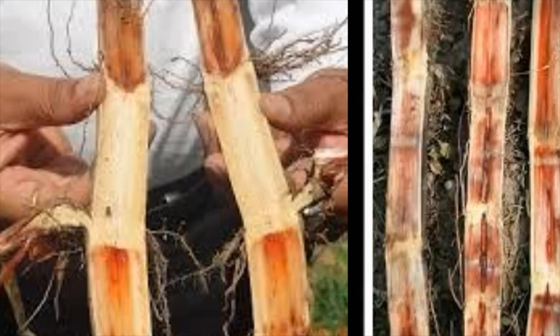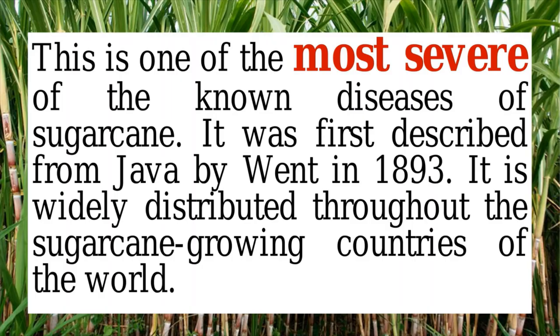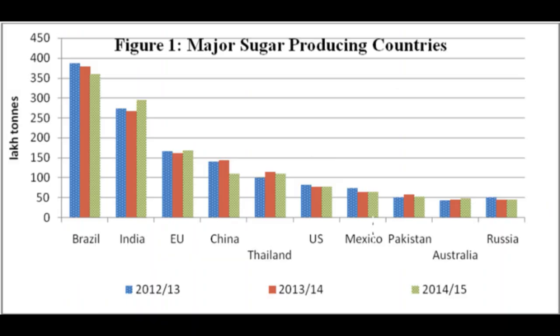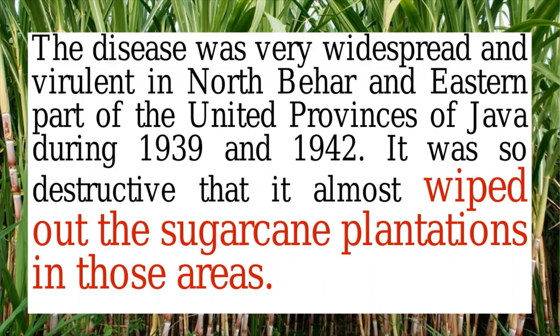Reddening has happened and this is the characteristic feature of red rot of sugarcane. It is one of the most severe known diseases of sugarcane, first reported in Java by Wendt in 1893. The disease is now spread all over the world and actually wiped out the entire sugarcane plantation during 1939 to 1942 in Java.